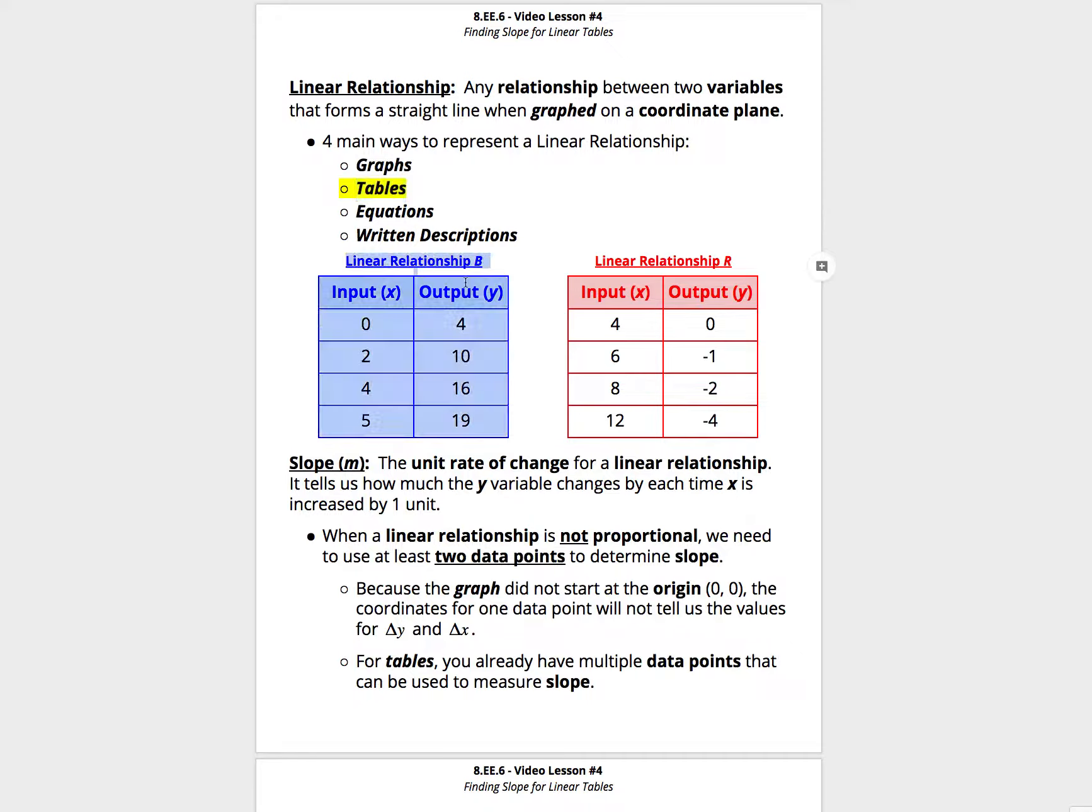We see two examples in blue and red here of linear relationships that are represented as a table, and our focus is going to be how do we determine the slope for these tables.